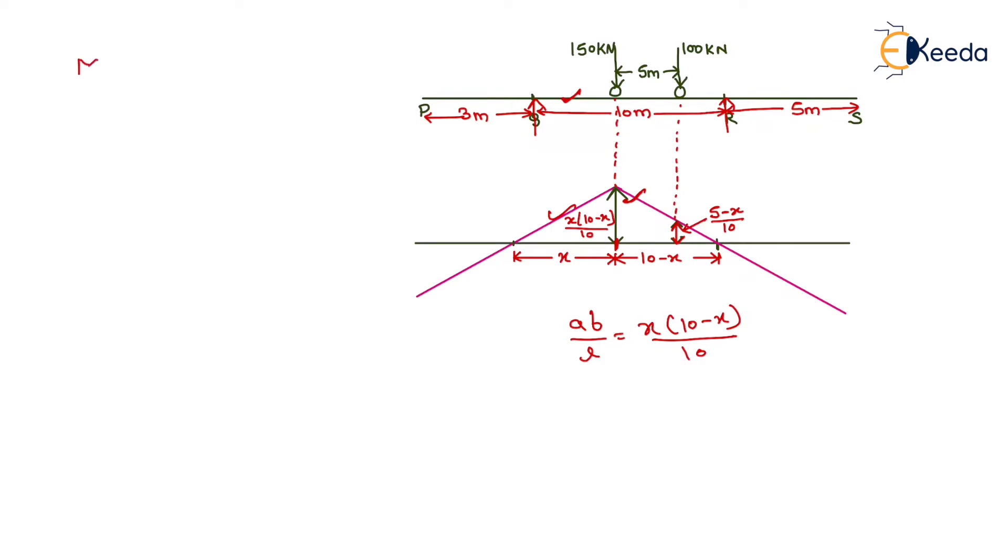The moment is 150 × X(10-X)/10 + 100 × (5-X)/10. After solving this, we get M = 200X - 25X².